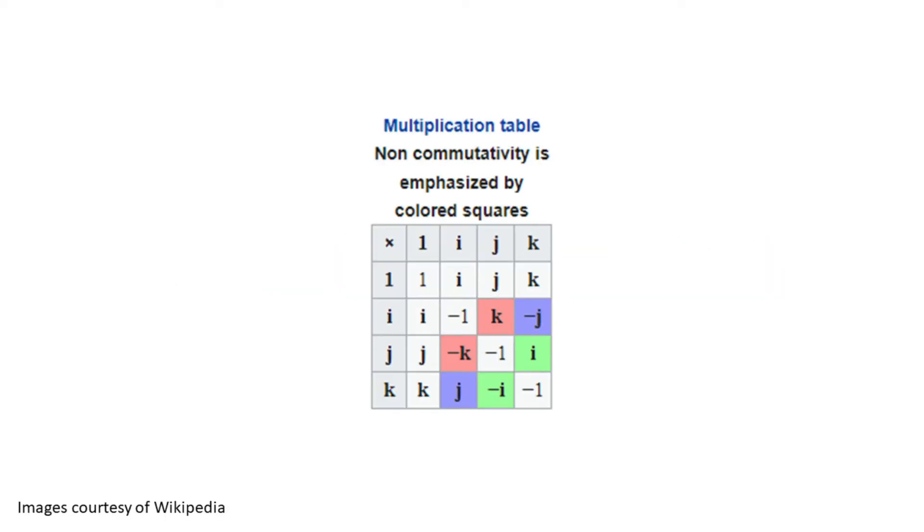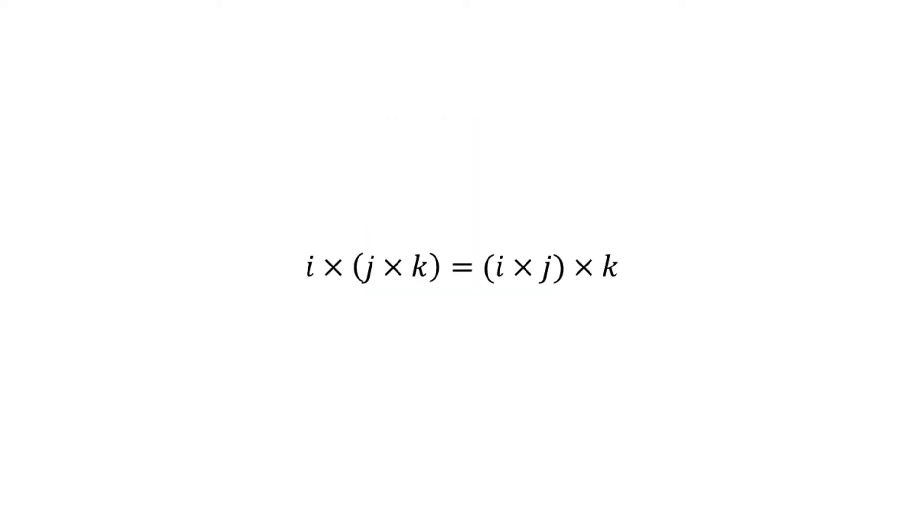The catch comes with multiplying the unit vectors that get dragged along with them. This table from Wikipedia is a pretty big help. Notice that the multiplication is not commutative, which means i times j does not equal j times i. But it is associative, which means it doesn't matter which we multiply first, i times j and k, or i and j times k.